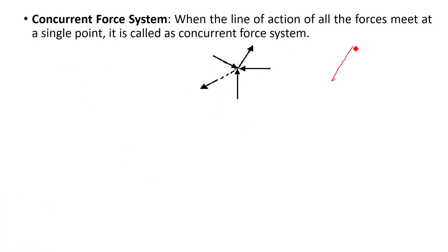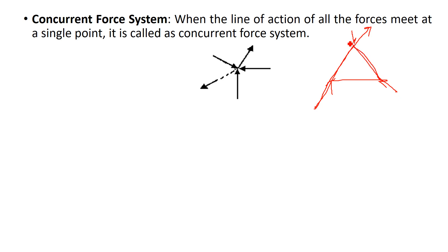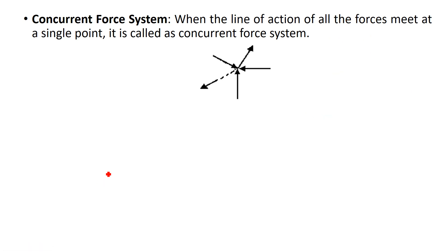For example, if you have a triangle with one force acting at each side, the forces are acting at three different points. But if you extend the line of action of each force, all three pass through the same point. So the line of action of all forces passes through the same point — it is called a concurrent force system.